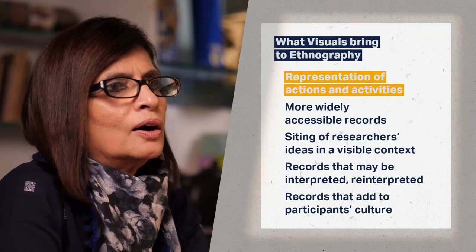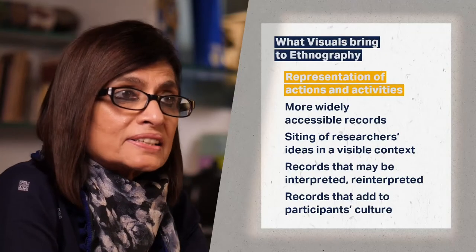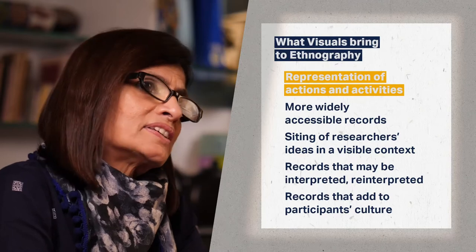As we come to the end of our module, let us discuss what the visual brings to ethnographic research. Often practices and activities are easily represented through visuals. Film in particular can record objects and the making of objects. Visual descriptions make it easy to convey and understand complex activities such as tying a shoelace, making pottery and so on.